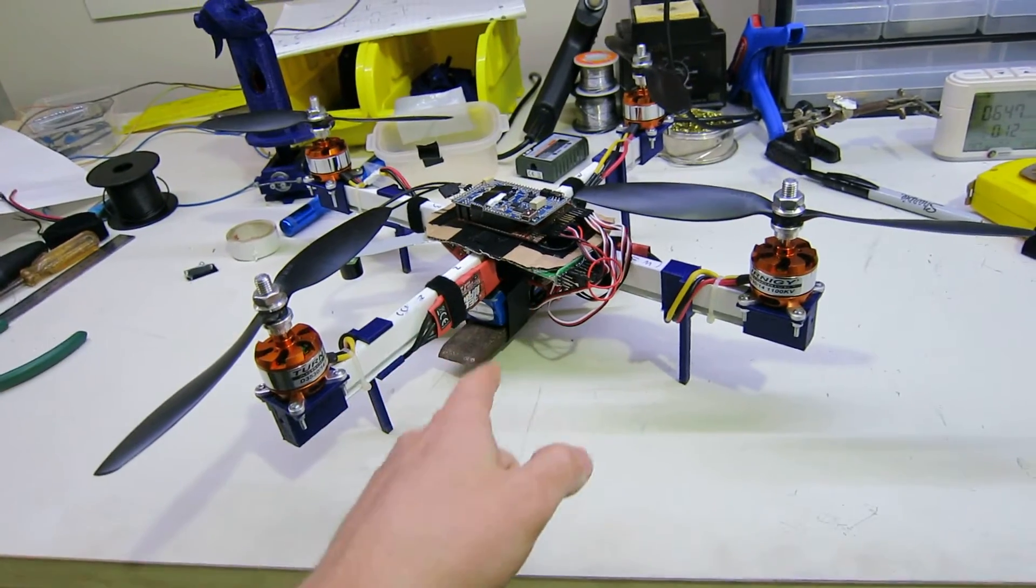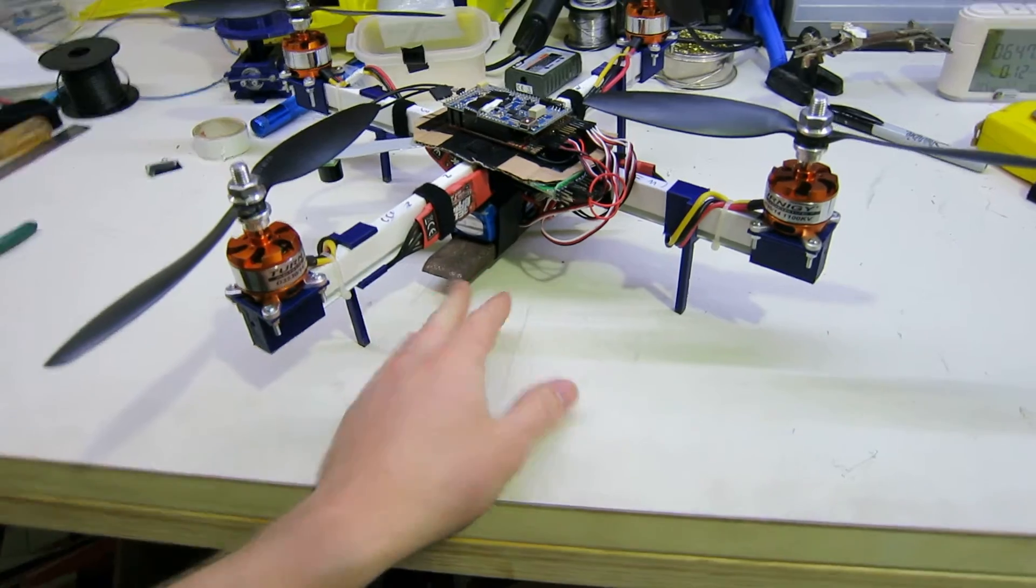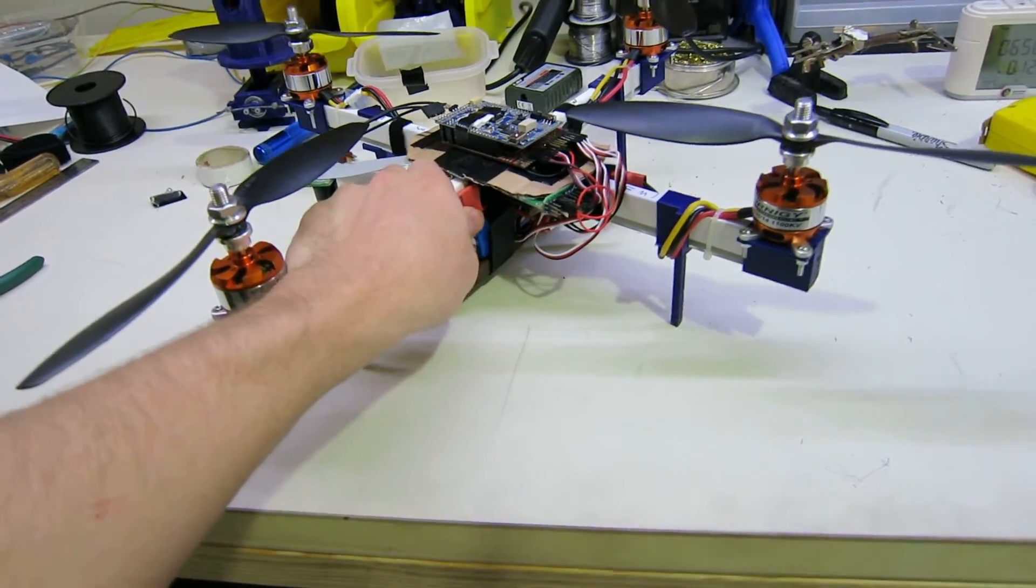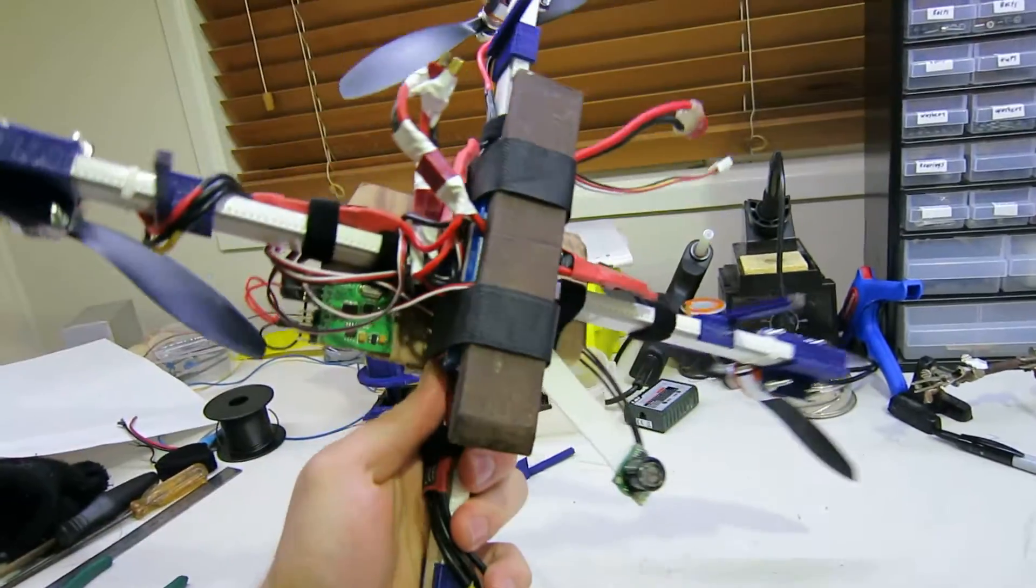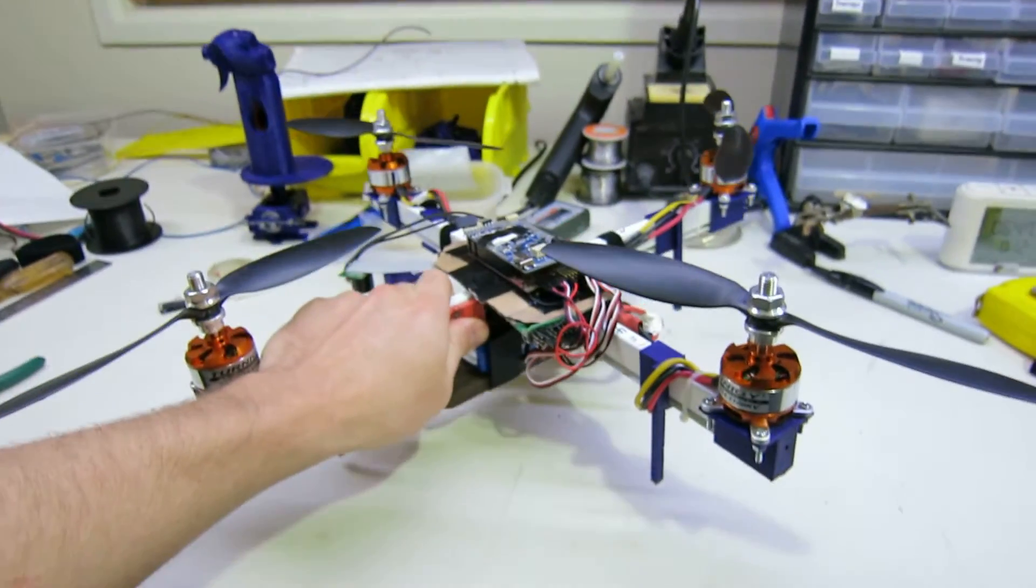This quad can lift its own weight which is 906 grams plus this 400 gram chunk of steel strapped to the bottom just as a dead weight. It's ludicrously powerful.